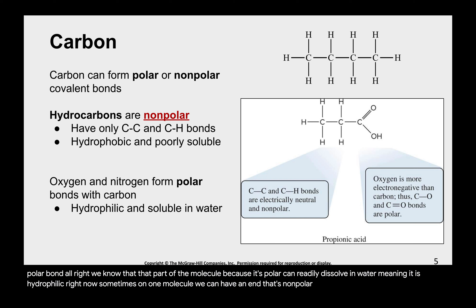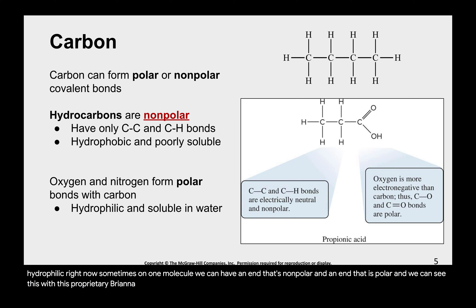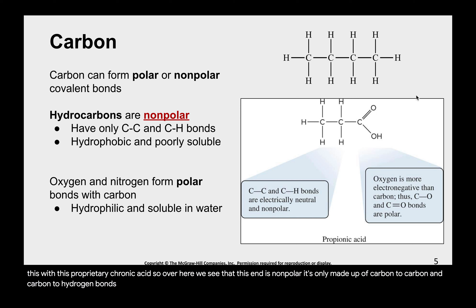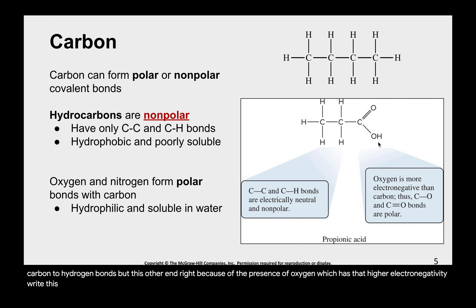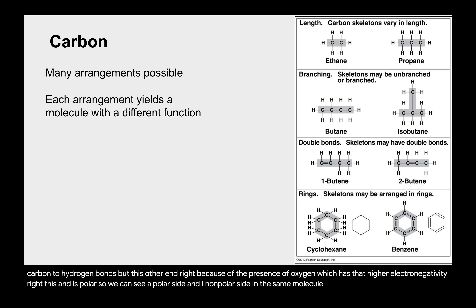Sometimes on one molecule we can have an end that's nonpolar and an end that is polar. We can see this with propionic acid — one end is nonpolar, made up only of carbon-to-carbon and carbon-to-hydrogen bonds, but the other end, because of the presence of oxygen with its higher electronegativity, is polar. So we can see a polar side and a nonpolar side in the same molecule.